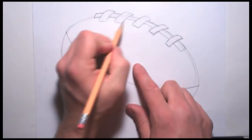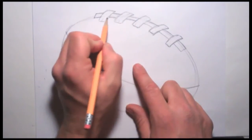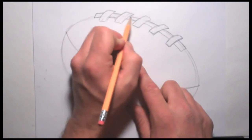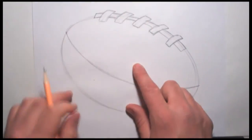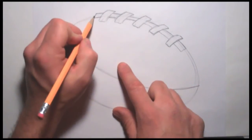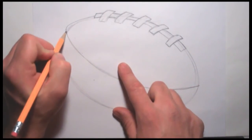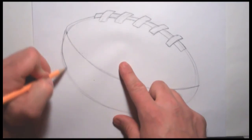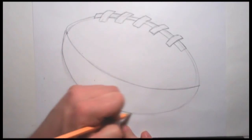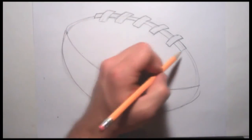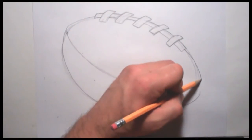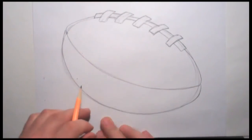And then we're left with a football with laces. Coming through and just darkening all these lines. I'll come through here and just darken up this part of the football. So we have a football that's more three dimensional.